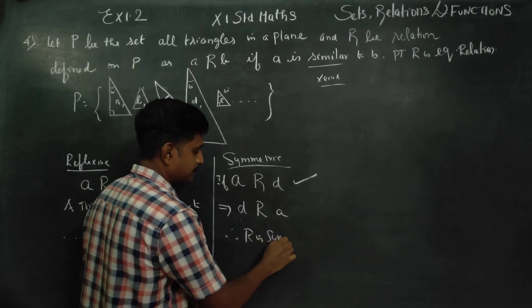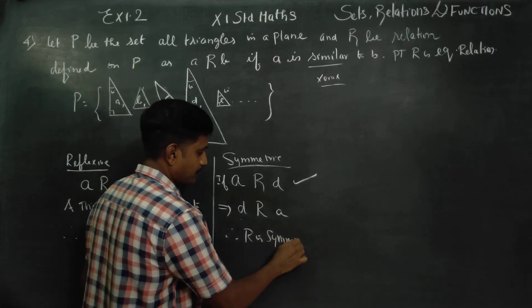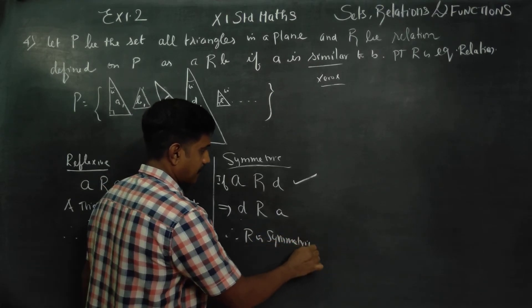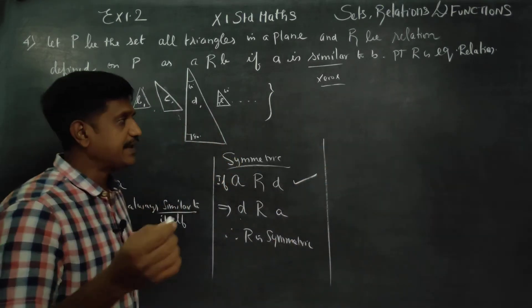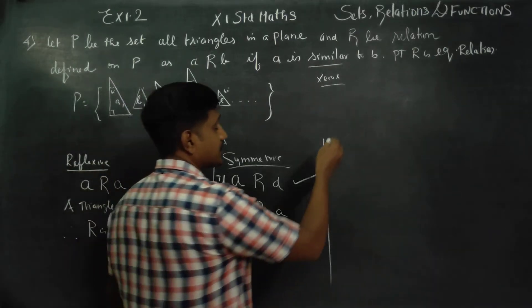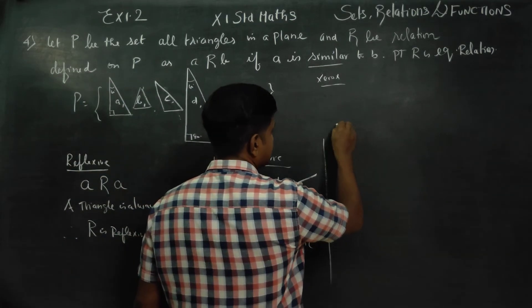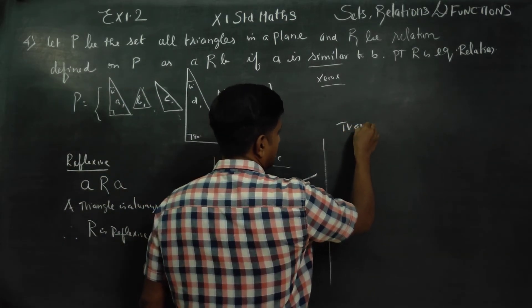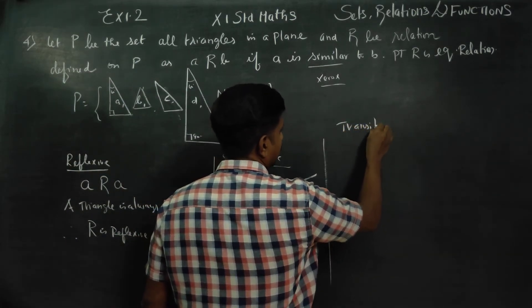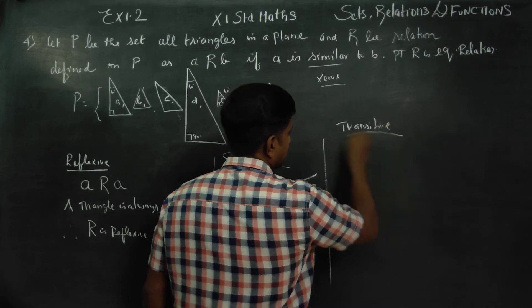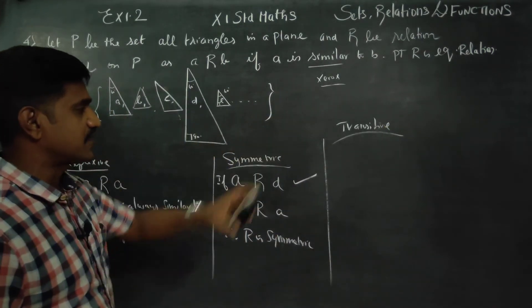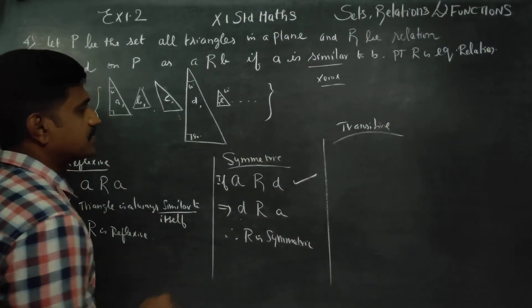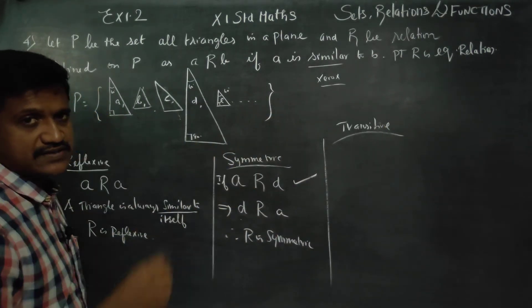Therefore R is symmetric. That is equivalence. Transitive is the last property. If reflexive, symmetric, and transitive all hold, then it is an equivalence relation. Transitive is now involved.